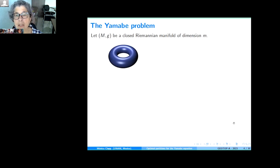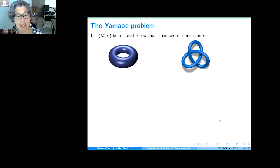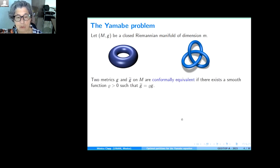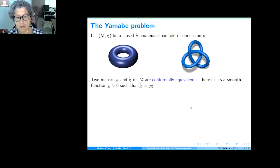We have a closed Riemannian manifold of dimension M — compact and without boundary. G is the Riemannian metric. The same smooth manifold admits many different Riemannian metrics. One way of classifying metrics is by conformal equivalence. Two metrics G and G-tilde on M are conformally equivalent if there is a smooth positive function on the manifold such that one metric is that function times the other. At each point, one metric is a positive multiple of the other, and the coefficient varies smoothly along the manifold.